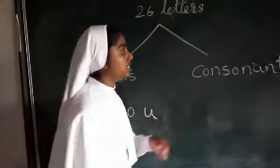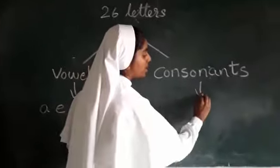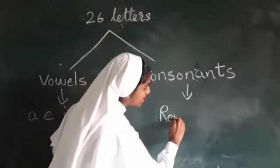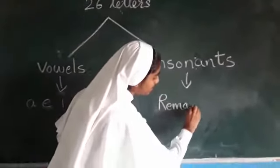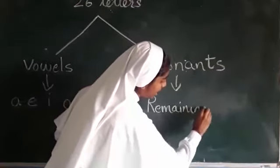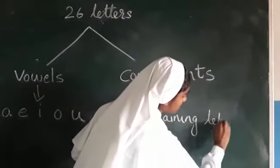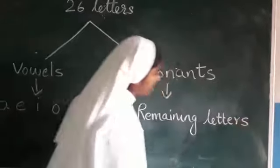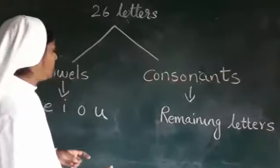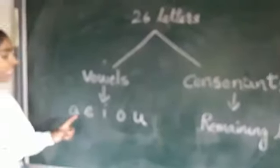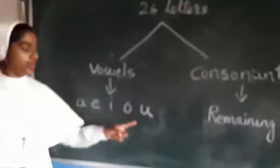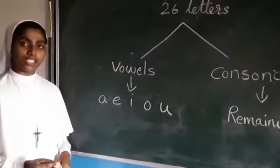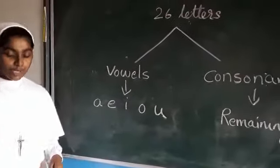Now, what are consonants? Consonants will be the remaining letters — the remaining letters. A, E, I, O, U — these are vowels, and the remaining letters will be the consonants.